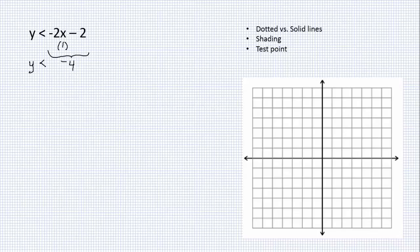think y is less than negative 4. So go down to negative 4. There is no point right there, but every number less than that, lined up with x equals 1, is a point on this graph. Think of all the points — not just whole numbers, but everything in between is included in this graph. So I've only plugged in one number for x, and I already have an infinite number of points on the graph.